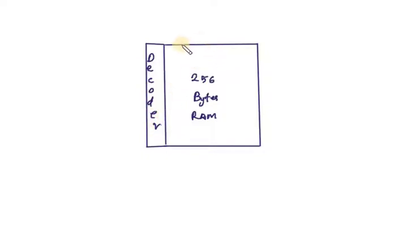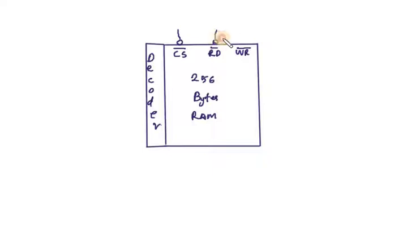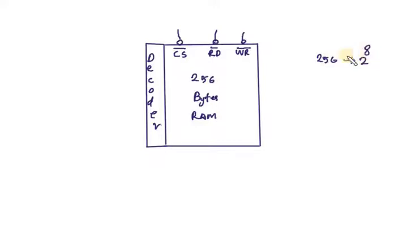You can see the chip select signal here — that means CS bar. If the value is zero, this chip is active. That means memory read and memory write are the two control lines. So we have to connect the 256-byte RAM, and 8 address lines will be connected to this RAM, because 2 raised to 8 is 256.